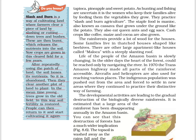The crops cultivated here include tapioca, pineapple, and sweet potato. They practice slash and burn cultivation. The staple food is manioc, also known as cassava, which grows underground like a potato. Cash crops like coffee, maize, and cocoa are also grown here. These people live in large apartment-like houses called maloka, with a steeply slanting roof.